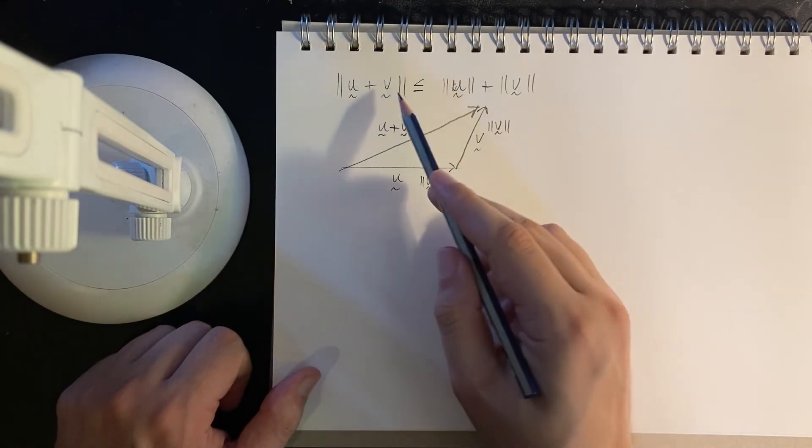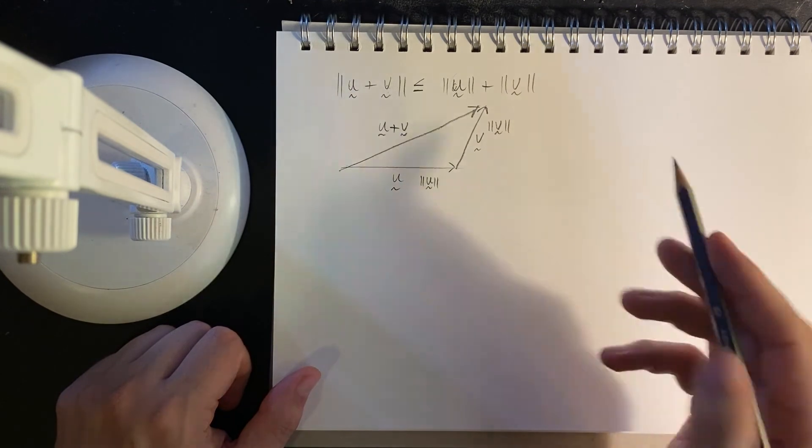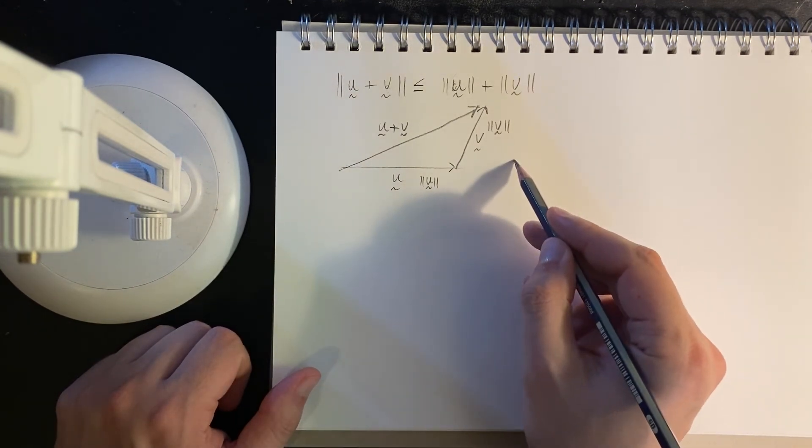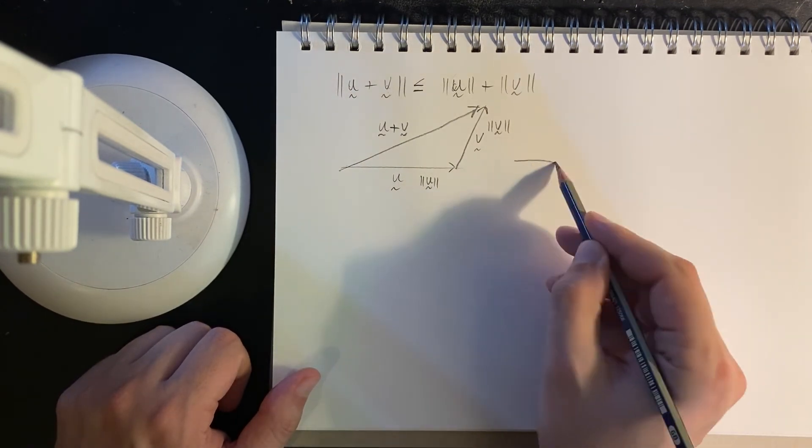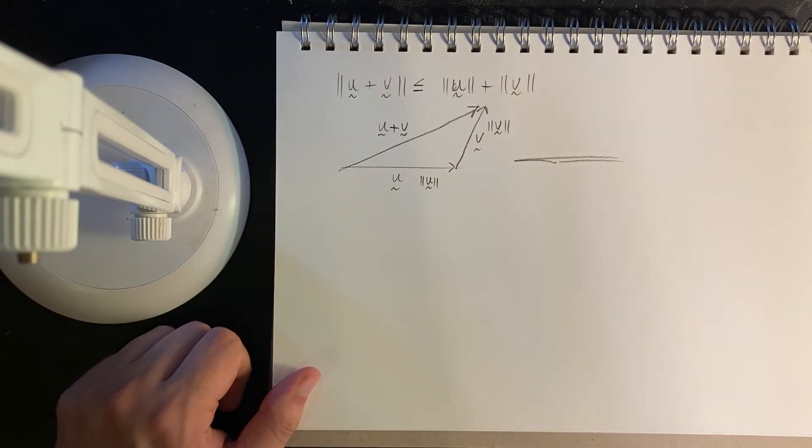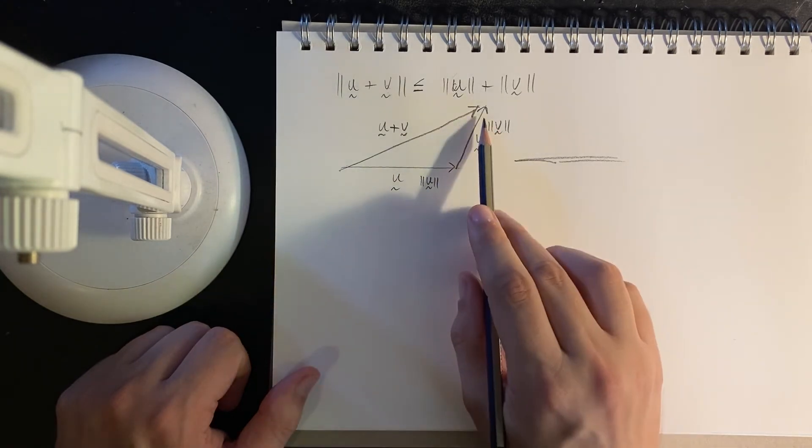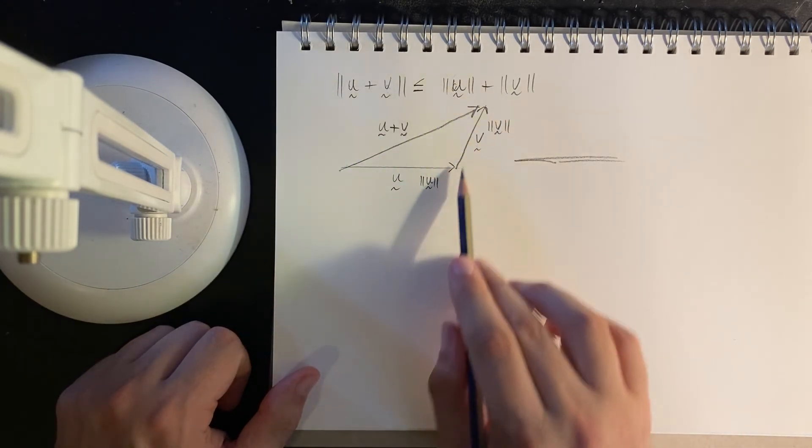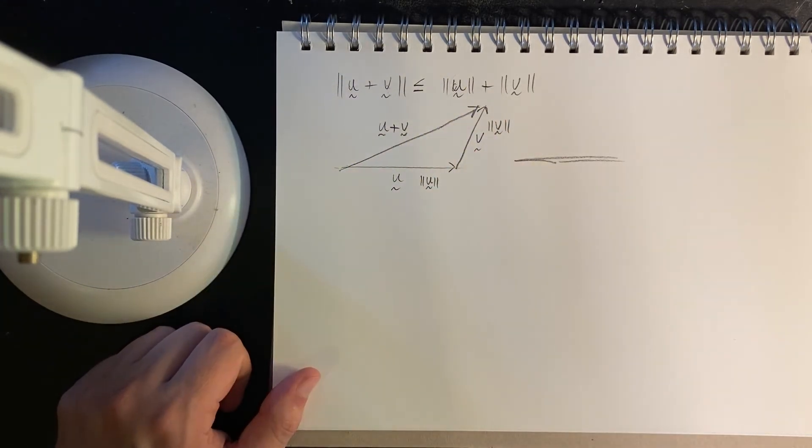So if all these lengths were equal, then they would sort of be lying on a flat plane, a flat line. We'd have u, v, and u plus v together. That's if the lengths are equal. But as you can see, the length is a little bit less, and that causes these lines to curl around,